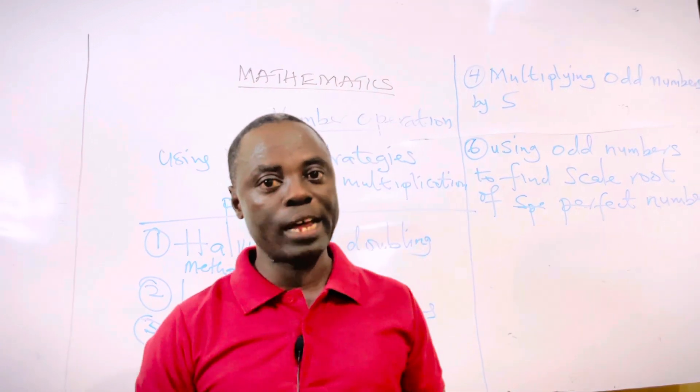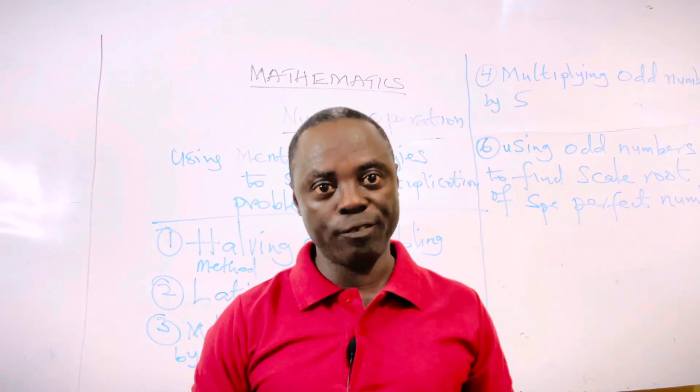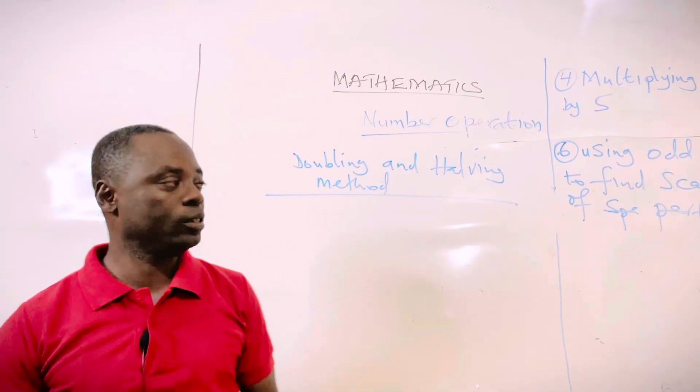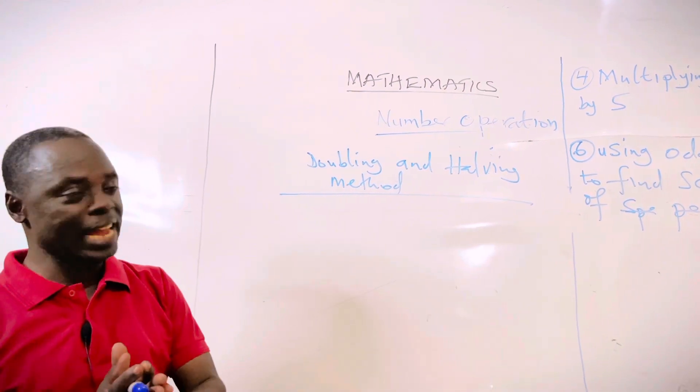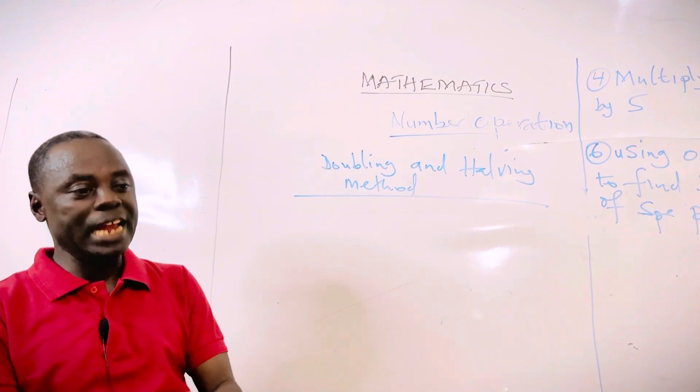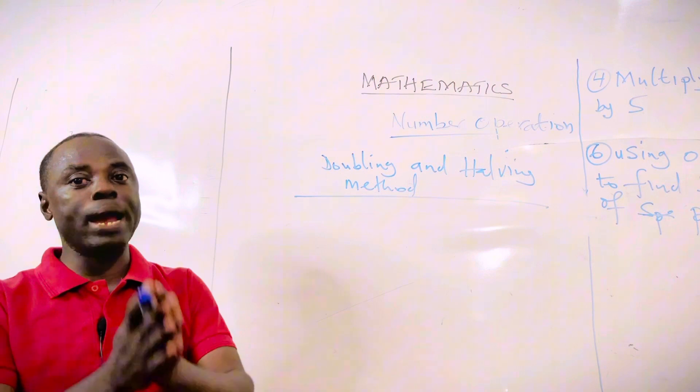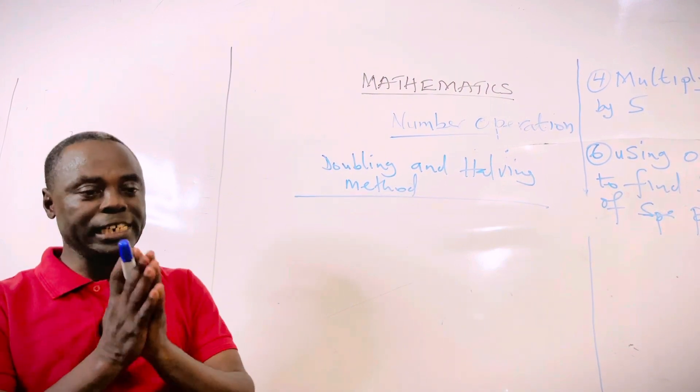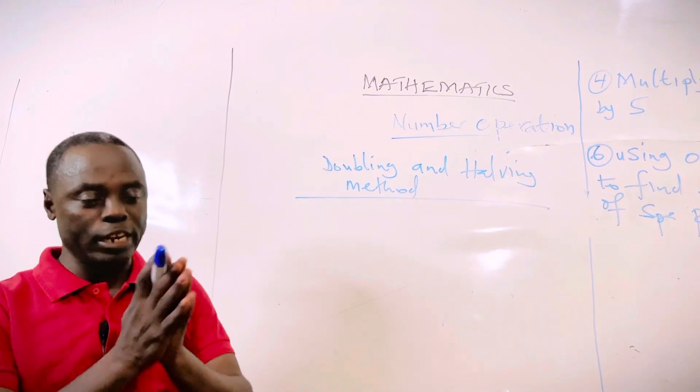So we will consider other methods later. I want to start with the doubling and halving method. Doubling means number times two, and halving means number divided by two. Then we say single digits and double digits depending on the number.